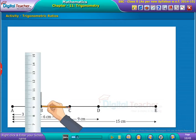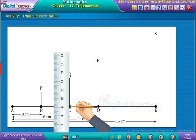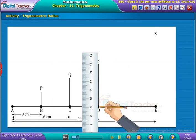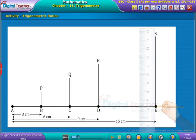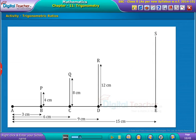Draw perpendiculars BP, CQ, DR and ES from the points B, C, D, E. These perpendiculars are of lengths 4 cm, 8 cm, 12 cm and 16 cm respectively.